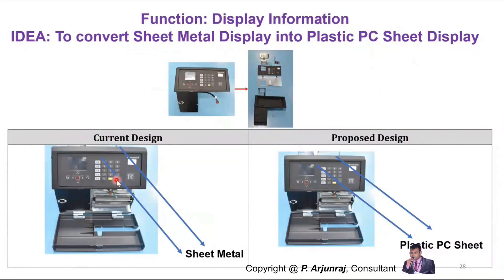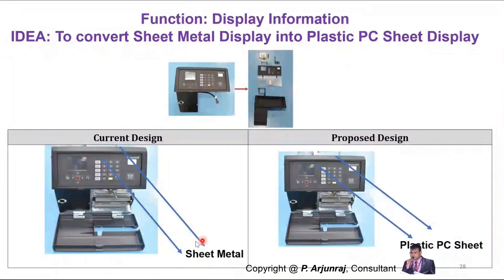Here is the display of the printer having sheet metal. The idea is to convert it to a PC plastic seat. When you convert this, the functions will not get affected. 'Display information' is not going to be affected even if you convert the sheet metal to a plastic PC seat.